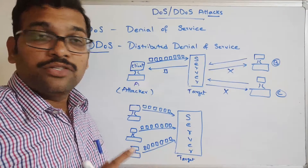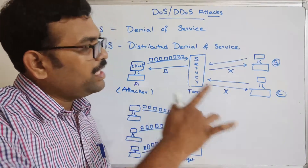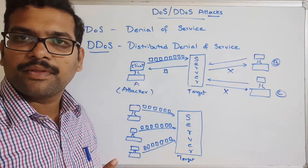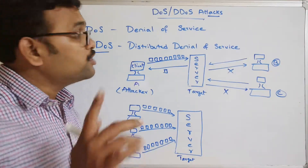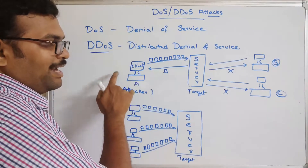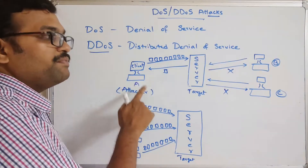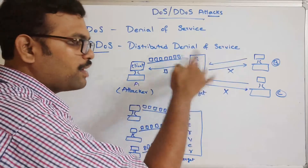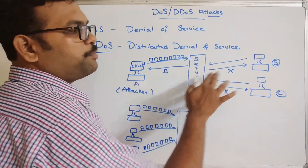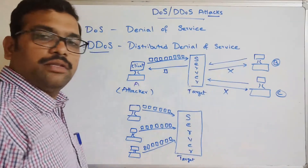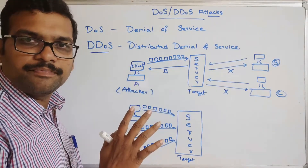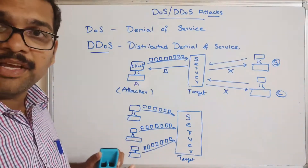B and C will think that the server is refusing the response. That's the Denial of Service — the attacker makes the server go down and prevents it from responding to the remaining legitimate clients. The same concept applies in DDOS, where multiple systems are involved.